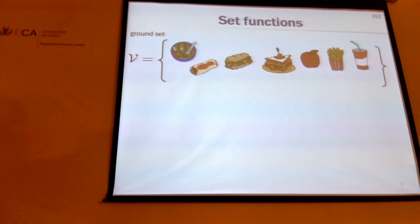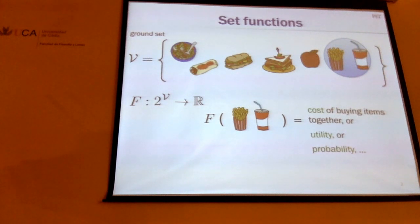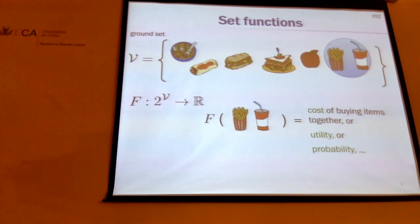So what are we talking about? A set function: the setup is that you have some set of items, a so-called ground set, and you're picking subsets of these items, and you have some function that gives scores to these subsets. This function could be a cost function, or a utility function — how much value do these items have for you together — or it could be a probability. Obviously this function is not necessarily linear. Utility could be very non-linear, probabilities could be very non-linear. So that's the setup: we have some set functions.